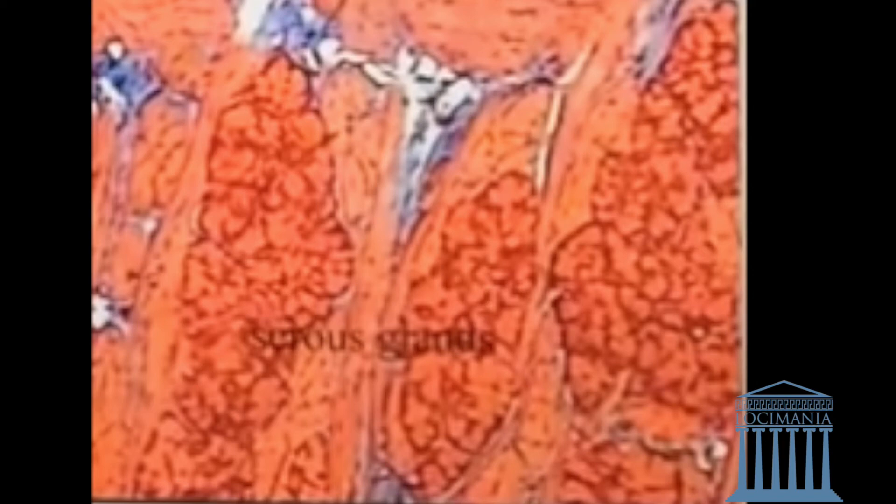Lastly, we're going to speak about the two types of glands. We have the serous glands and the light mucus glands. The serous glands are dark and red-colored, as we can see here — dark compared to the light mucus glands.